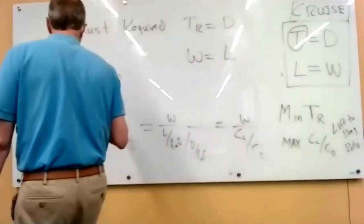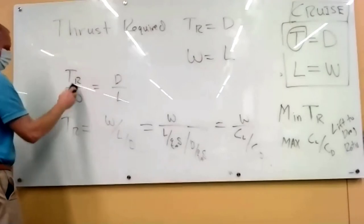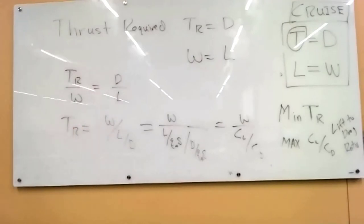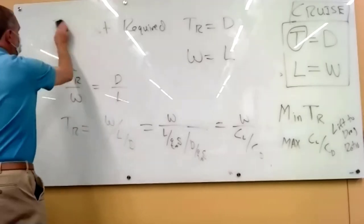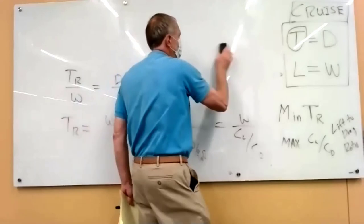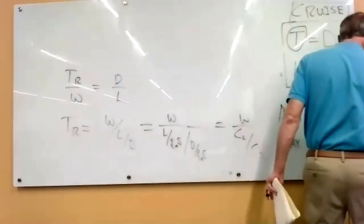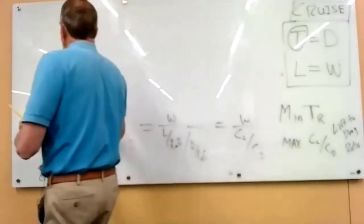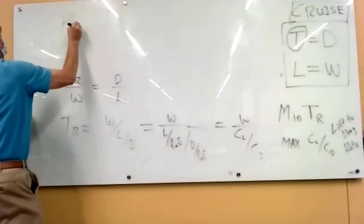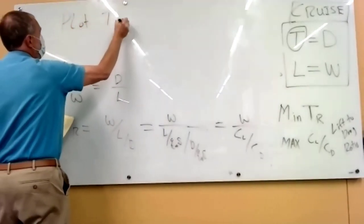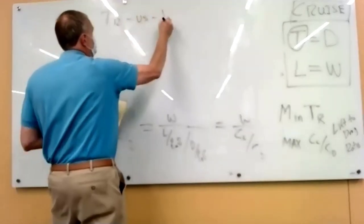Now, what we want to do is plot the thrust required versus velocity. Because if we change velocity, we need different thrusts. Makes sense. If you want to go really fast, you're going to need more thrust. But it turns out if you want to go really slow, you need more thrust as well. But the goal here for performance is to figure out how, at different speeds, we need different thrusts required. So we want to plot thrust required versus velocity.